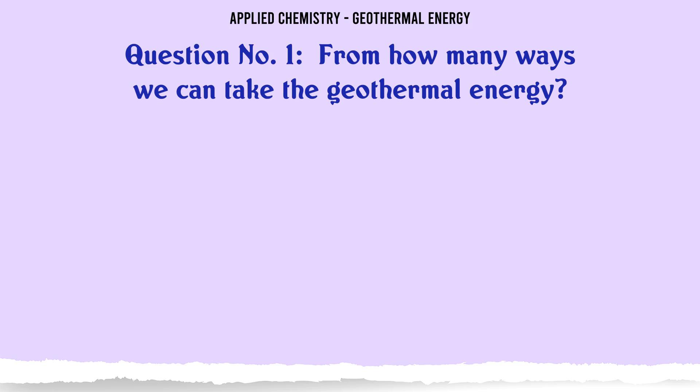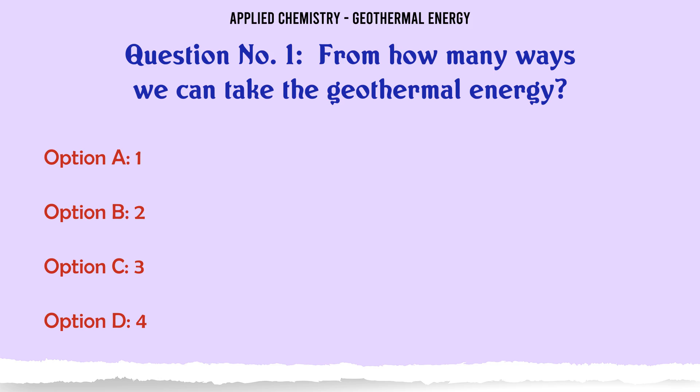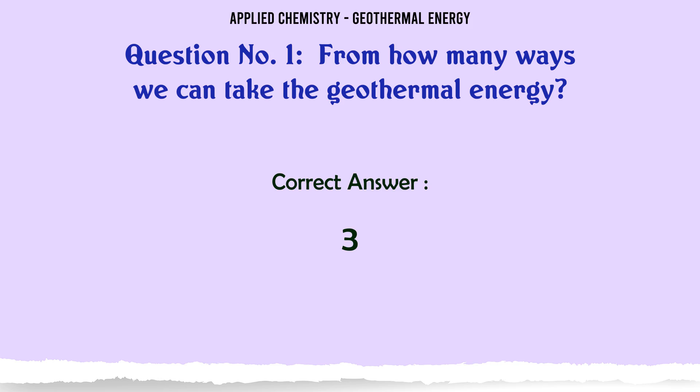From how many ways can we take geothermal energy? A: 1, B: 2, C: 3, D: 4. The correct answer is 3.